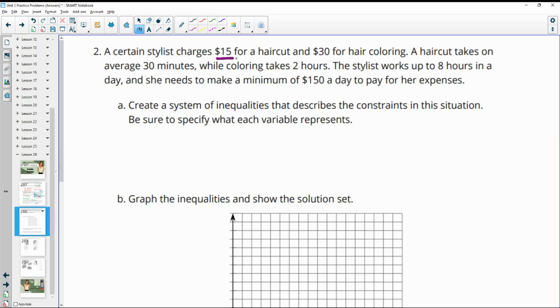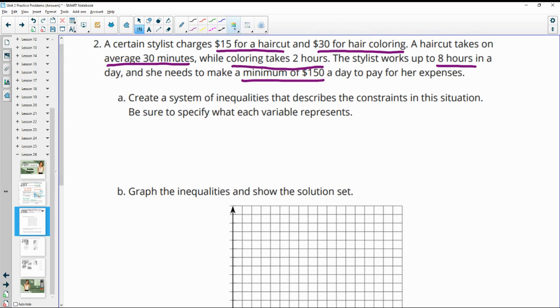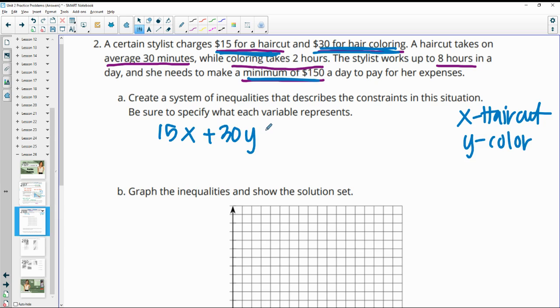All right, then number two. A certain stylist charges $15 for a haircut and $30 for hair coloring. A haircut takes on average 30 minutes while a coloring takes two hours. The stylist works up to eight hours in a day and she needs to make a minimum of $150 to pay her expenses. Create a system of inequalities that describes these constraints. So let me go ahead and change some of these colors. So I'm going to take the money ones together. So we have $15 for a haircut. And so I'm just going to call the haircut X. And the Y will be the hair color.